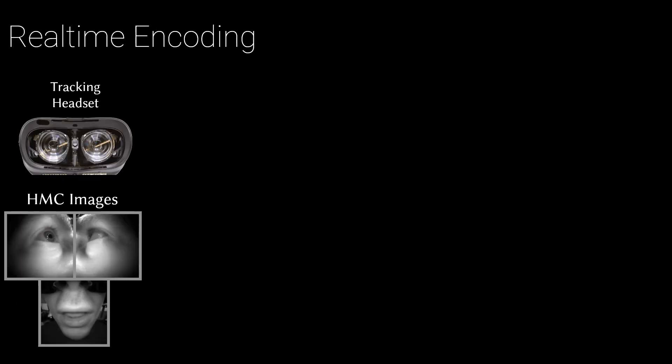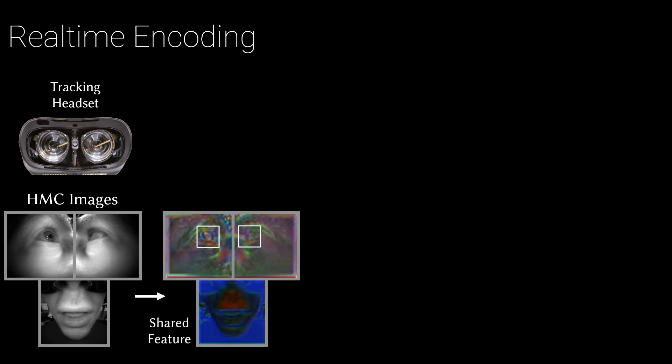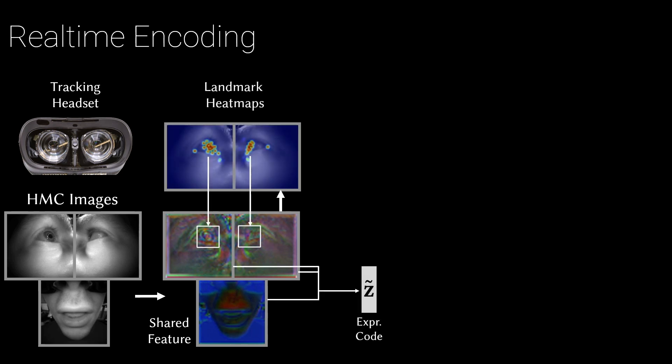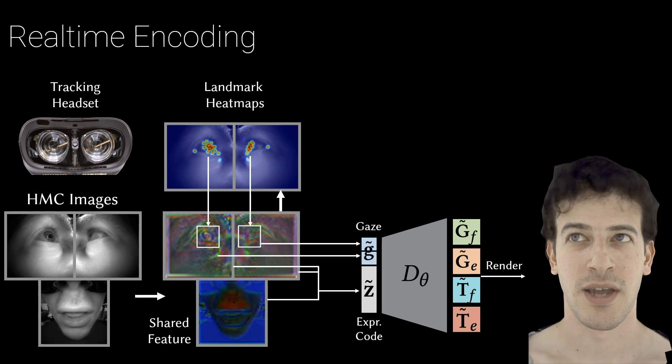Using images from a simple tracking headset with only three cameras, we produce a shared feature map to describe the appearance of the face. From this feature map, we regress to expression codes as well as bounding boxes for each eye. Using only features within the bounding boxes, we predict gaze independently from expression and use these inputs to drive the avatar in real time.